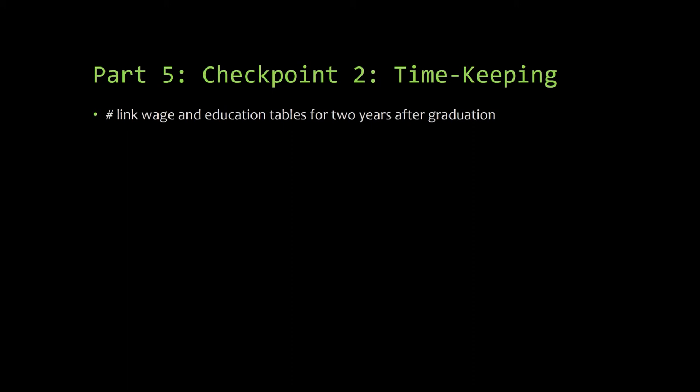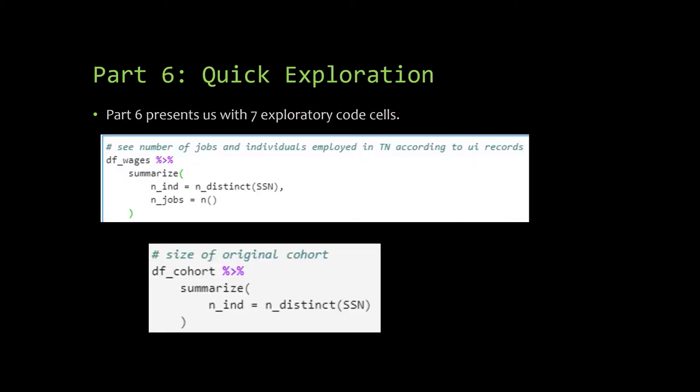And now you will find yourself at Checkpoint 2, timekeeping. We are at the end of Part 5 of Notebook 2. See if you can manipulate the code to include wages from 2 years prior to graduation. Part 6, Quick Exploration, presents us with 7 quick code cells.